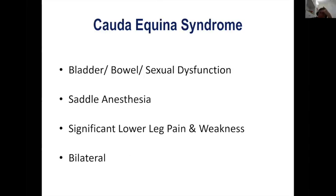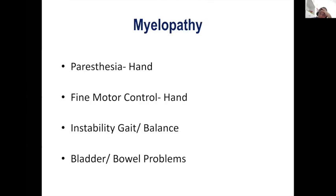In case of cauda equina syndrome, always suspect in a patient who presents with new-onset pain, and ask about bladder and bowel symptoms, any sexual dysfunction, saddle anesthesia, and any significant lower leg pain or weakness. Especially if it is bilateral, you should rule out cauda equina syndrome.